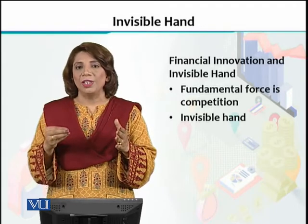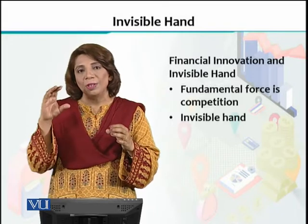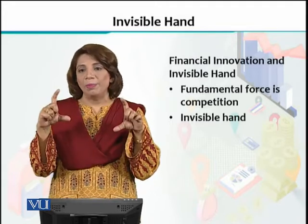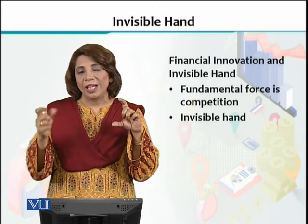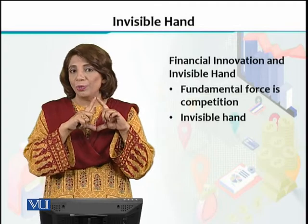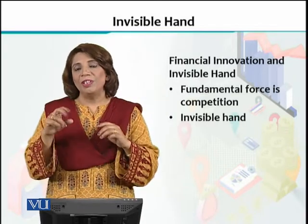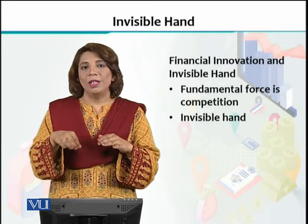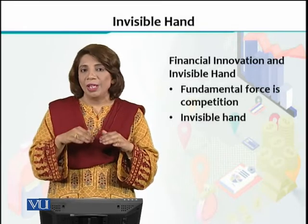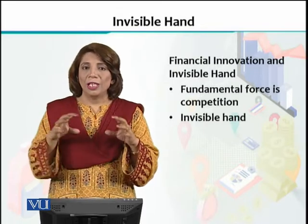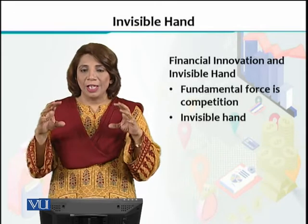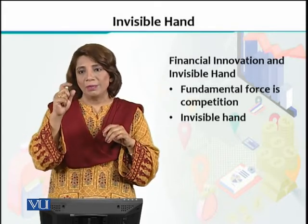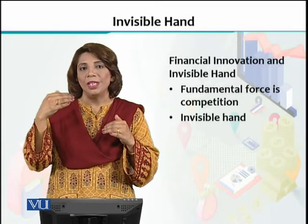Now you only see Mastercard and Visa in the market. So eventually, the Invisible Hand operated, competition grew, and the extra advantage or high profit margin that Diners Club got as the first financial innovator to introduce credit cards to the market — that profit margin got squeezed. Competition increased, and only the most successful companies with their credit cards remained in the market while others had to leave. This is how financial innovations and the invisible hand collectively operate in the market, and it ends up at a level where the margin of profit becomes very small compared to what they foresaw in the beginning.